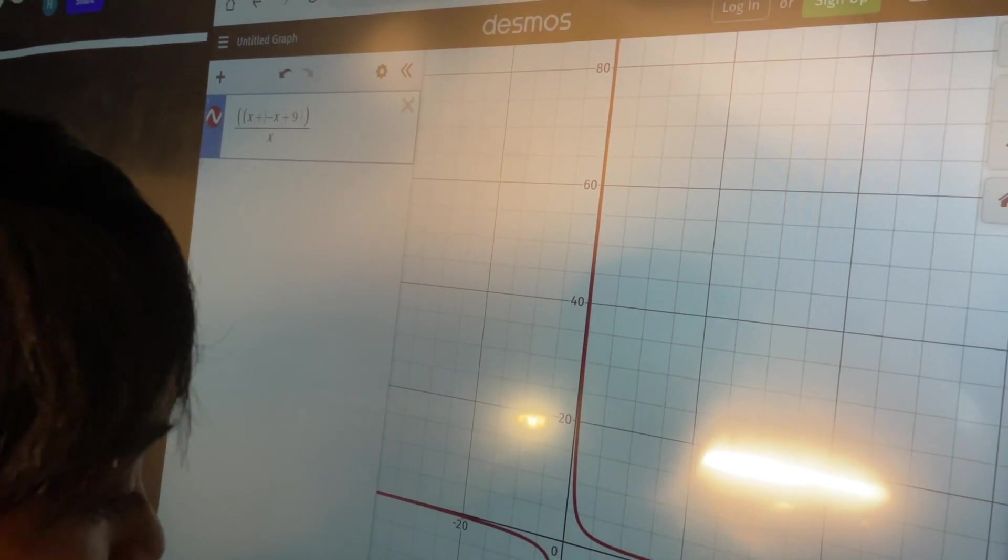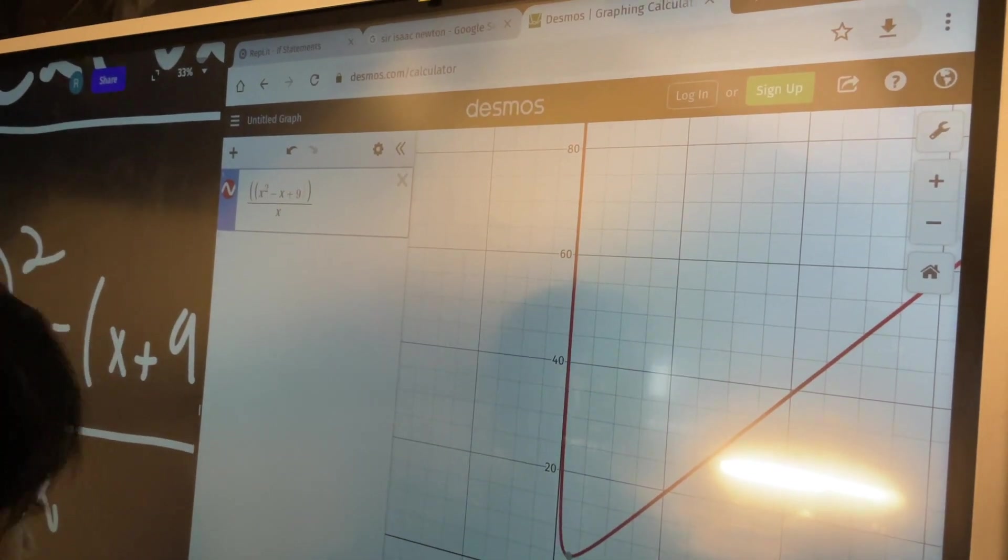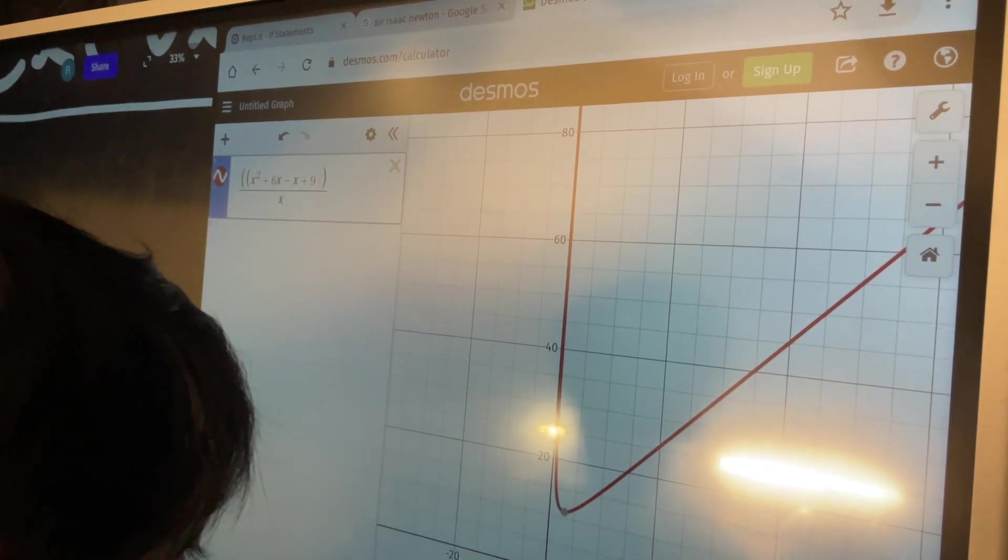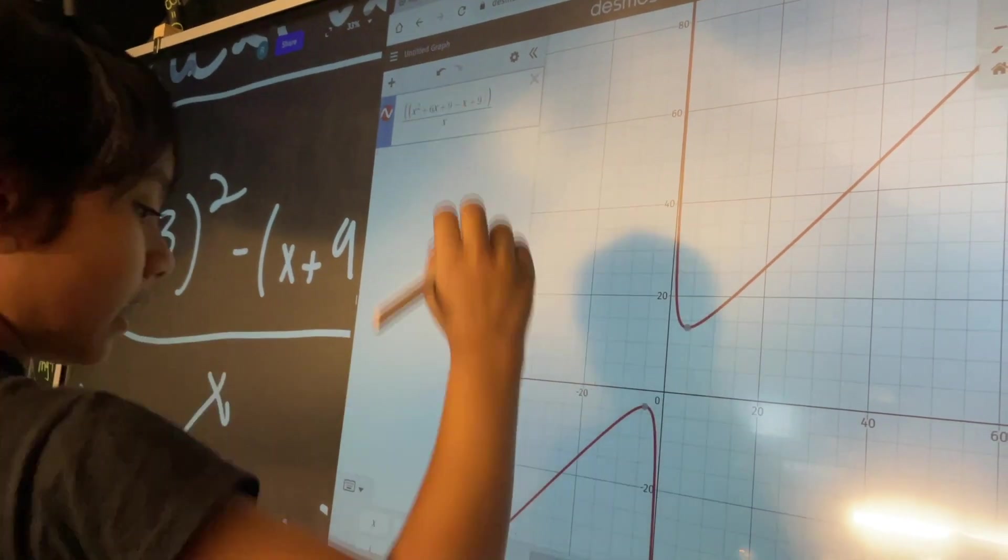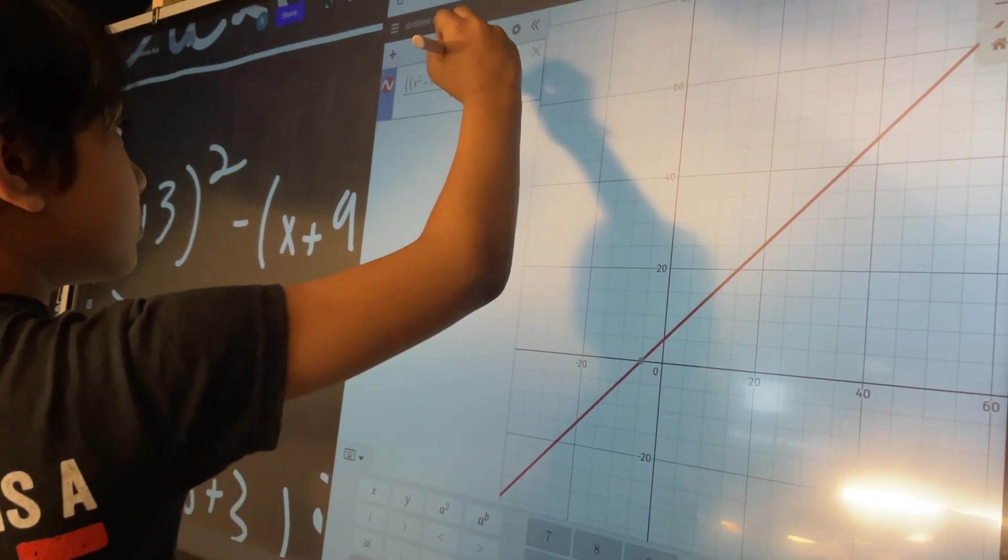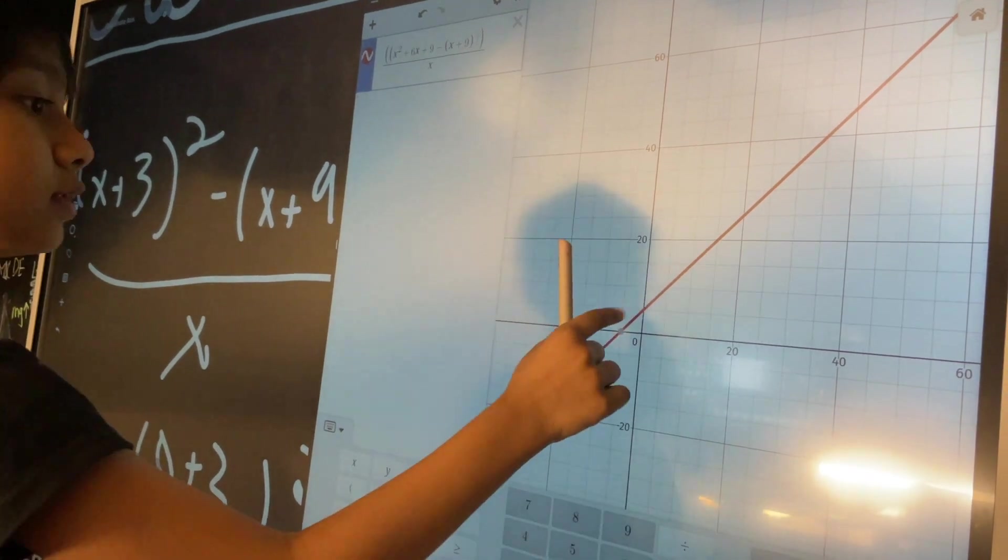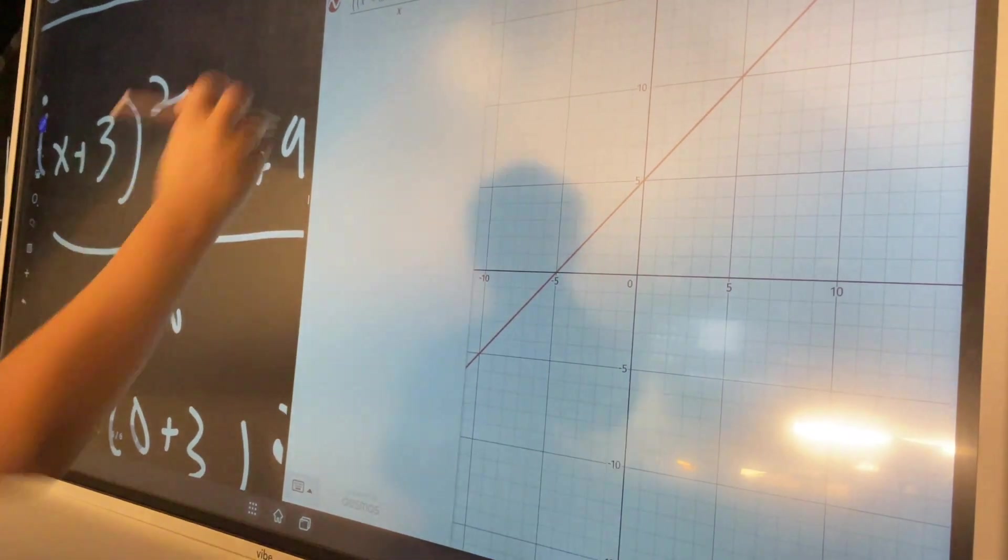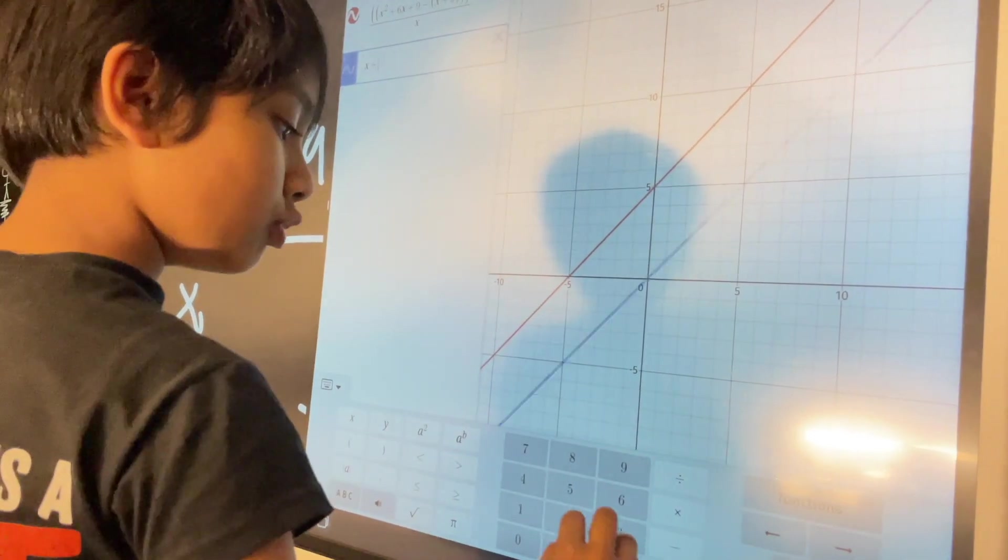So, x squared, I can always do this way. Plus 6x plus 9. And then, minus x plus 9. And, we put that. So, look. It looks the exact same as x plus 5. Because, if we graph x plus 5, it's going to overlap.